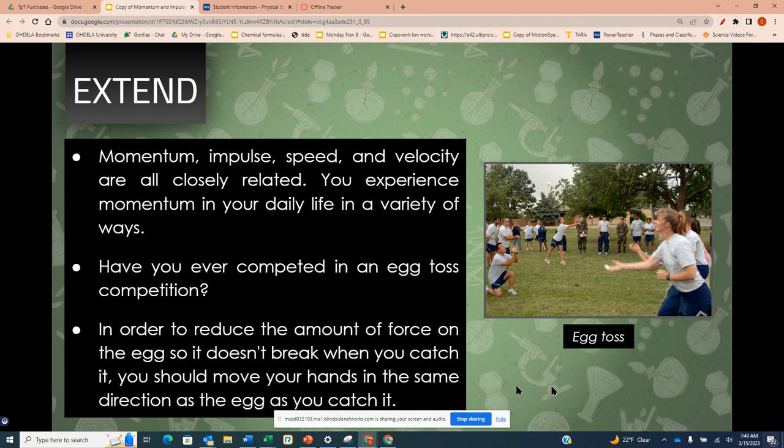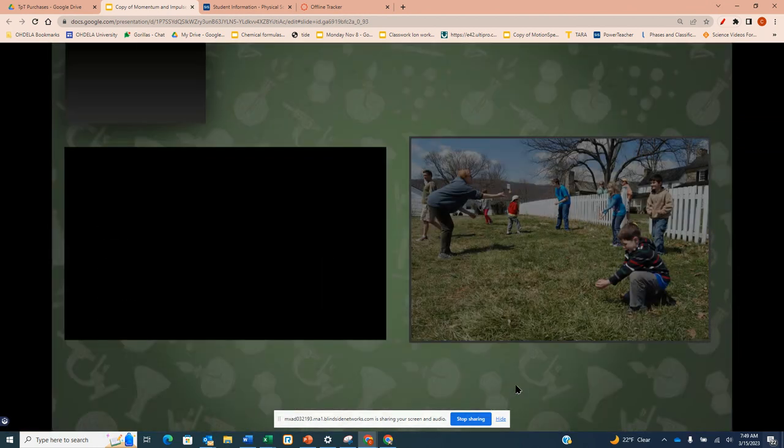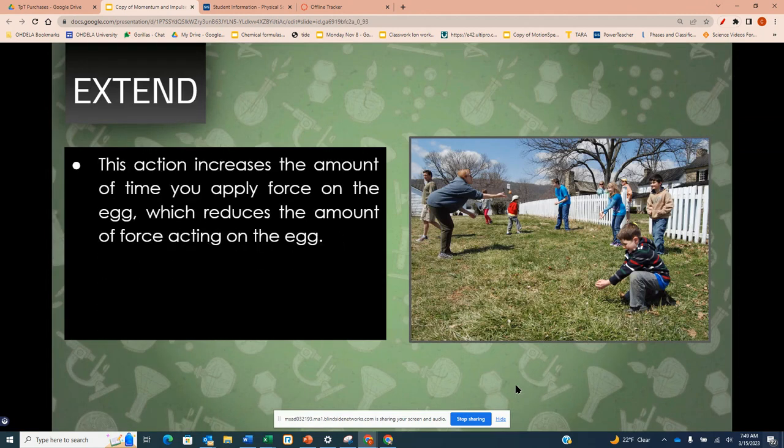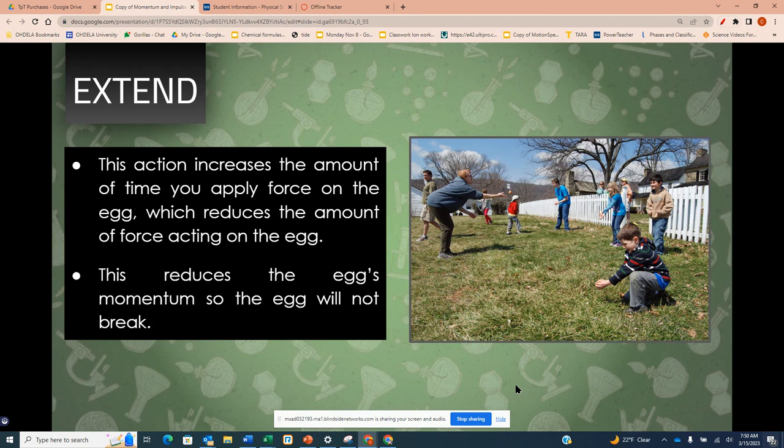In order to reduce the amount of force on an egg so it doesn't break when you catch it, you should move your hand in the same direction as the egg as you catch it. This action increases the amount of time you apply force on the egg, which reduces the amount of force acting on the egg. This reduces the egg's momentum so the egg will not break.